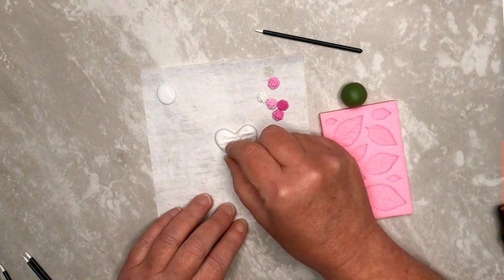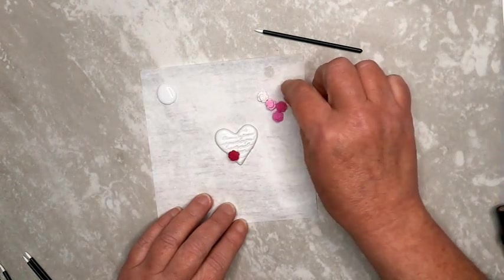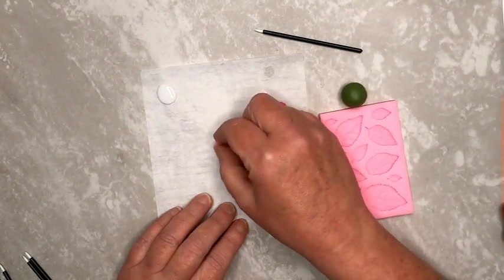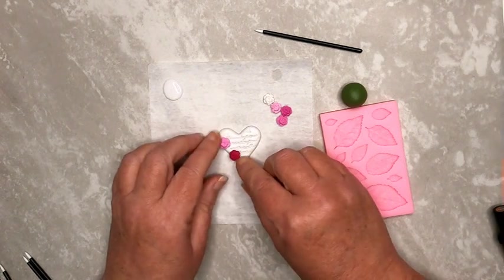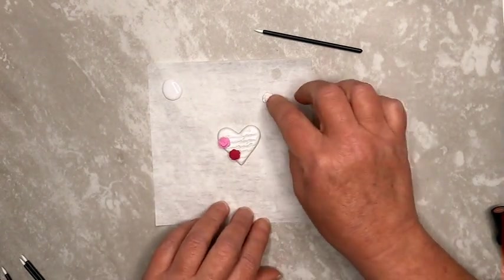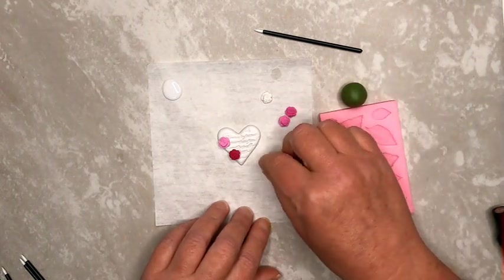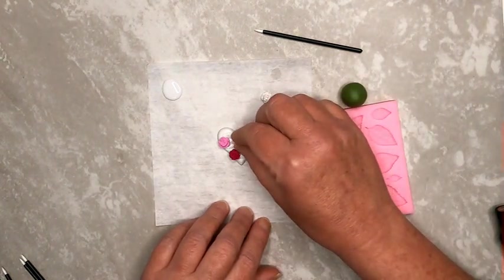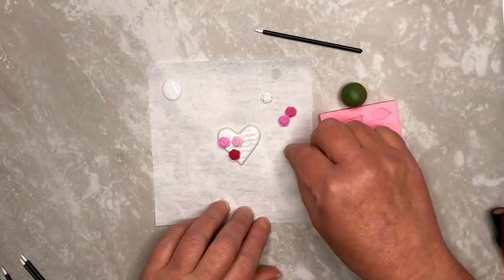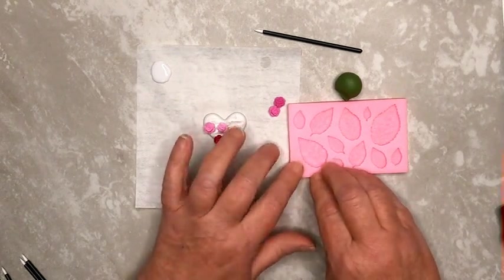Begin placing the baked roses on the heart shape, but don't press in. You just really want to get an idea of where you'd like to place them. You don't have to use every shade of your roses, but you do want to make sure that you use enough shades to get some contrast and interest.